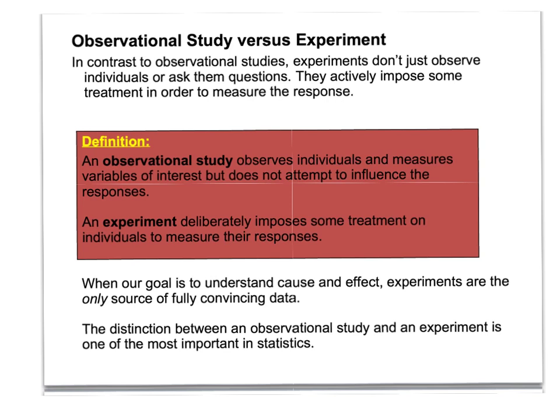One of the key skills in AP Stats is determining the difference between an observational study and an experiment. In observations, we literally just observe — we don't make any changes or impart any treatment; we just observe and count what's happening. In experiments, on the other hand, we actually impose some sort of treatment — for example, giving one group a new aspirin and the other group a placebo to see if there's a difference in headaches. Experiments are used when we want to determine cause and effect.